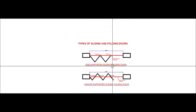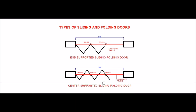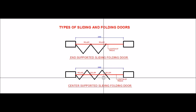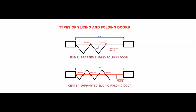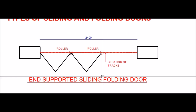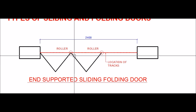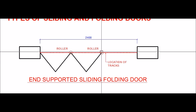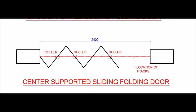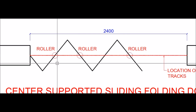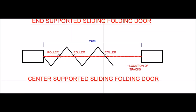There is also another type called the center-supported door. A schematic sketch shows the difference between end-supported and center-supported sliding folding doors. In the end-supported type, the rollers are positioned at the end of the door shutter. In the center-supported type, the rollers are situated in the center of the door panel — as seen here, here, and here.